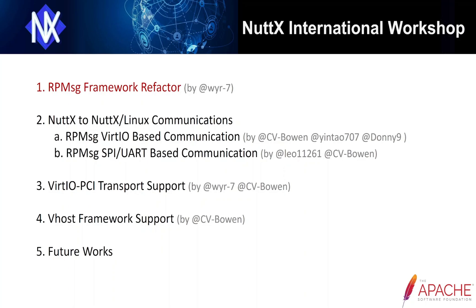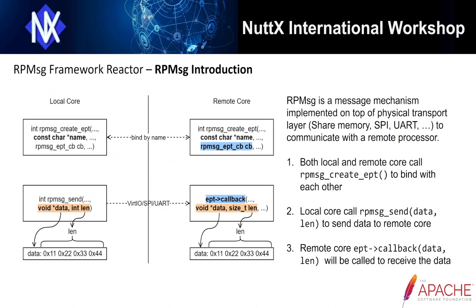The first topic is the IP message framework refactor. Before introducing the refactor, I would like to briefly introduce how the IP message services use the IP message API to send and receive messages, so you can better understand why we need to refactor the framework. IP message is a message mechanism implemented on top of a physical transport layer, such as virtualIO, SPI, and UART, to communicate with the remote processor.